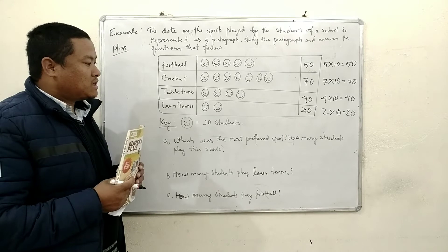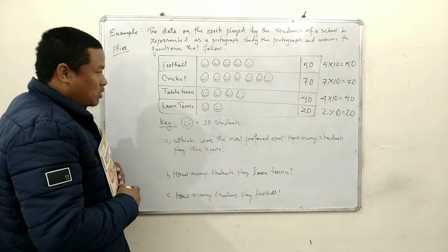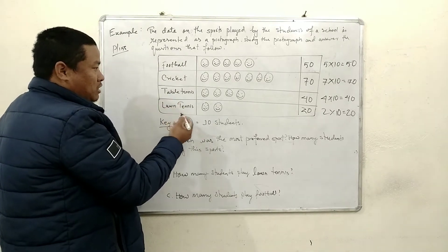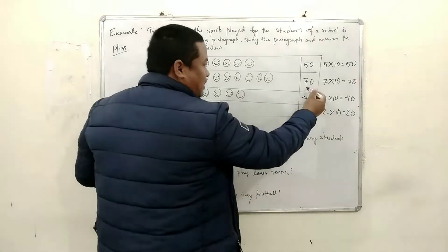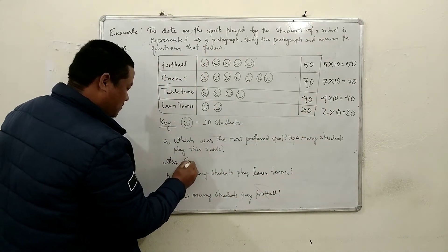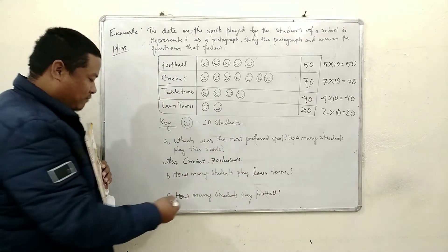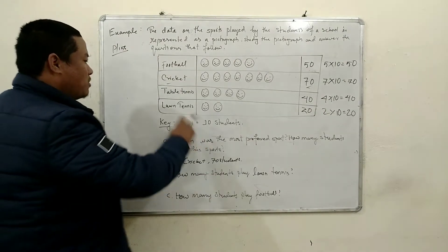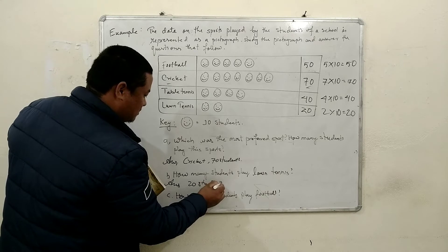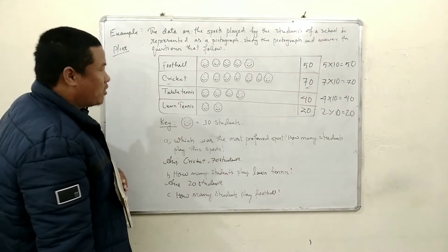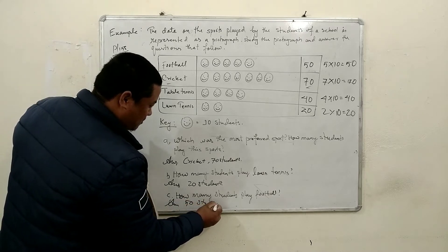Now children, some questions are given and we have to answer them. Question A: which was the most preferred sport? Among football, cricket, table tennis, and lawn tennis, the most popular one is cricket. And how many students play cricket? 70. So the answer is cricket, 70 students. Question B: how many students play lawn tennis? Only 20 — so 20 students. Question C: how many students play football? 50 — so the answer is 50 students.